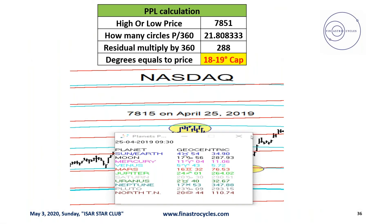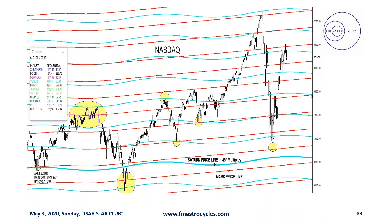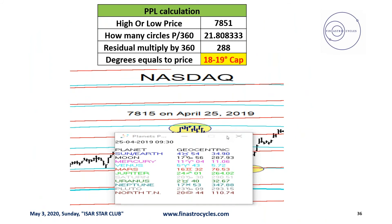We have pointed all these important tops and bottoms and I am elaborating them in detail to show how they worked. This price is 7851, which got a resistance on April 25th, 2019. If we do this conversion — divide by 360, take the residual, multiply by 360 — we get 288. In our conversion table, 288 corresponds to 18 to 19 degrees of Capricorn. If we look at the planetary position for April 25th, 18 to 19 degrees Capricorn shows something significant.